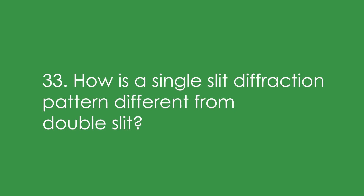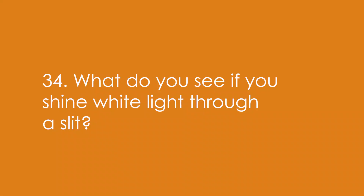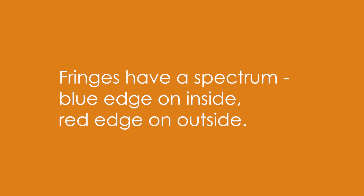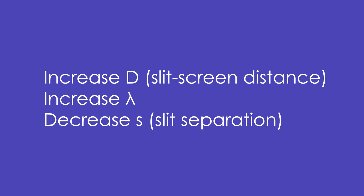33. How is a single slit diffraction pattern different from a double slit? The central maximum is twice the width of the subsequent fringes and the intensity decreases greatly with distance. 34. What do you see if you shine white light through a slit or a double slit? The fringes have a spectrum — a blue edge on the inside and a red edge on the outside because red diffracts more. 35. What three things can you do to increase the fringe spacing W? You can increase the slit-screen distance (big D), increase lambda, and decrease the slit separation.